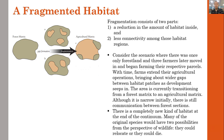Fragmentation consists of two parts: number one is a reduction in the amount of habitat, and number two is less connectivity among those habitat regions due to gap formation.